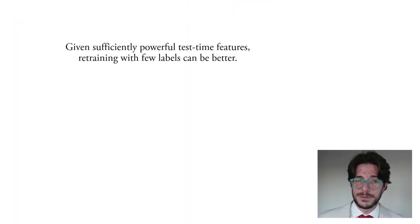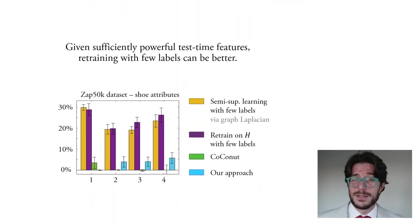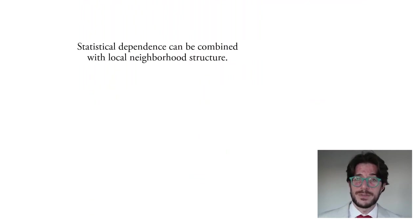Of course, given sufficiently powerful test time features, retraining with just a few labels can be better than our approach. For instance, this situation can occur if we use classical features to train the initial F, but then use deep learned test time features.